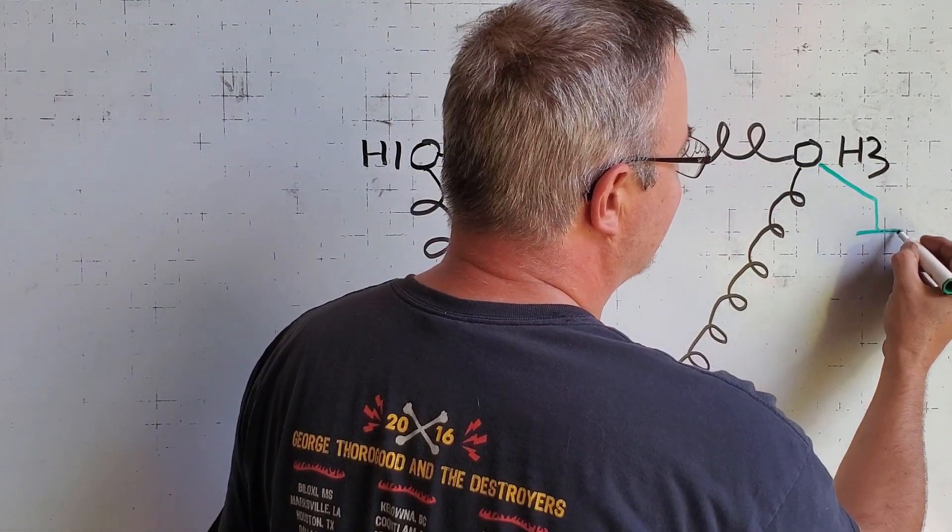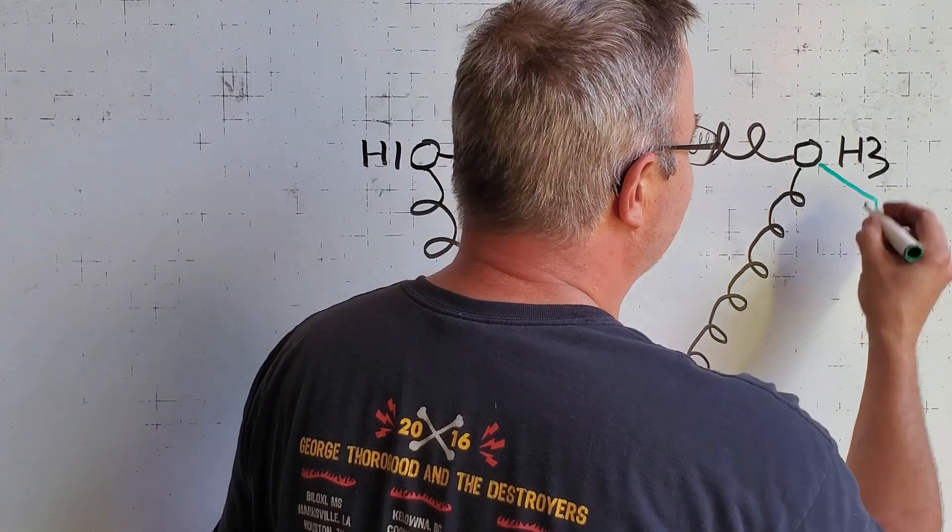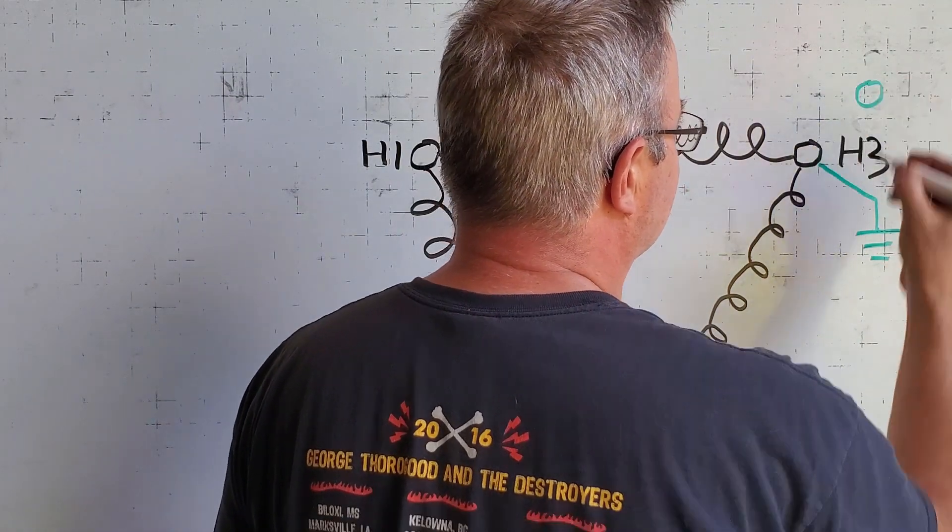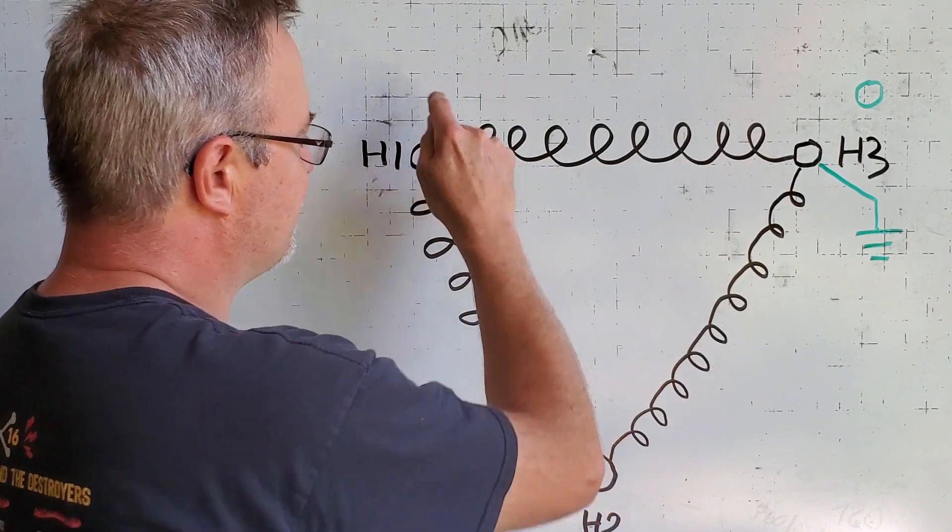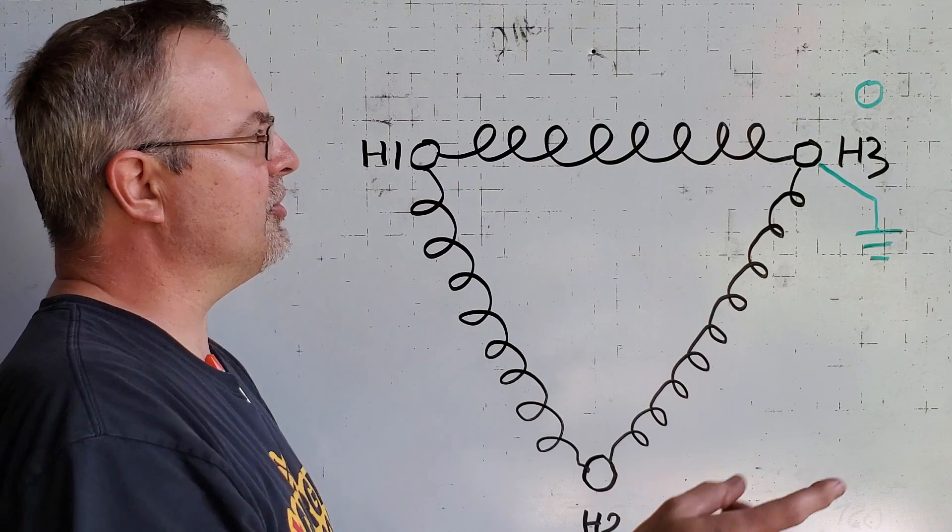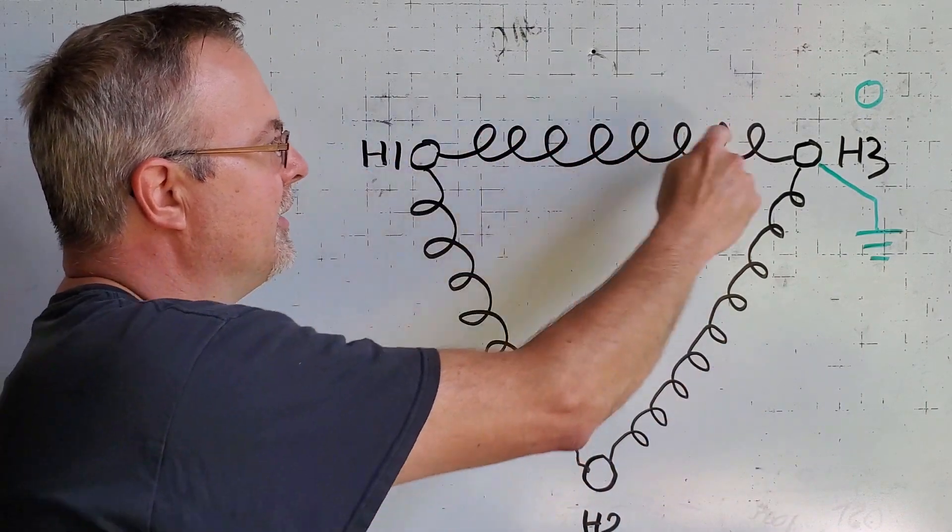But for the purposes of measuring voltages, he said to go ahead and we're going to ground this H3 point so we can say that this is going to be zero volts, and then we can read the voltages all along this coil up to H1.